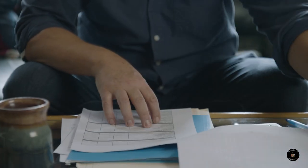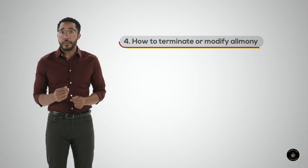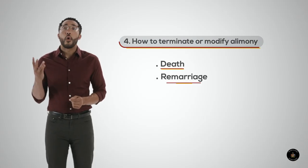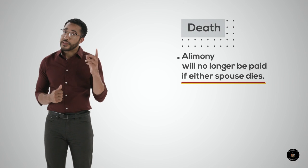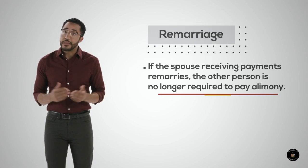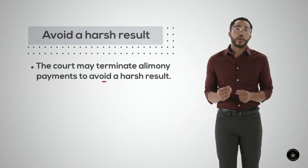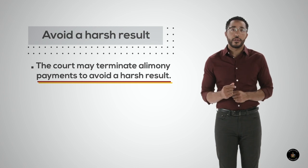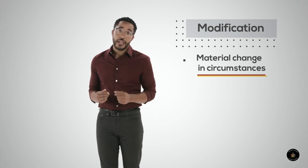If the court grants alimony in your divorce case, you should know about how to change the payments and when payments may end. There are three ways alimony payments may terminate: death, remarriage, or to avoid a harsh result. Alimony will no longer be paid if either spouse dies. Also, if the spouse receiving payments remarries, the other person is no longer required to pay alimony unless the spouses have agreed otherwise. The court may also terminate alimony payments to avoid a harsh result. Alimony payments may be modified if there is a material change in circumstances, but there are exceptions. For example, if your divorce judgment states that no modification may be made, then you cannot change alimony payments.